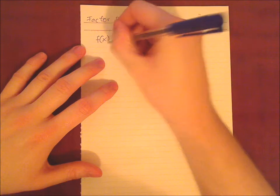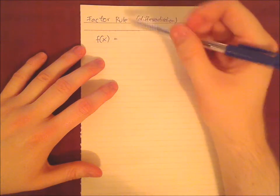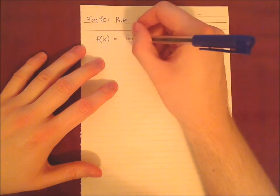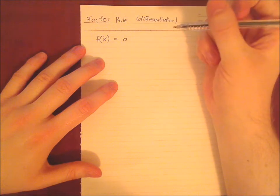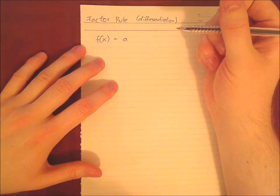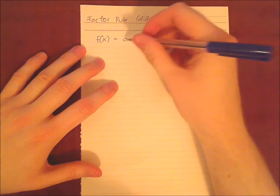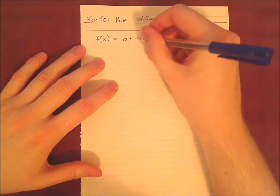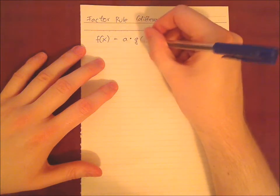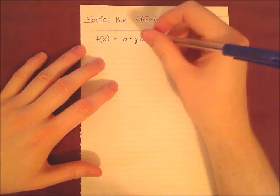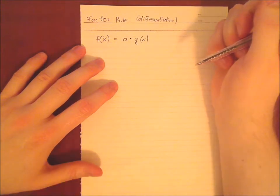We have a function and we have, this is why it's called a factor rule, we have a factor which is called, in this case, a constant coefficient. Why? Because it's constant, there's no variable in it. And we have some other function, functional part, like afterwards or before, but combined through multiplication.